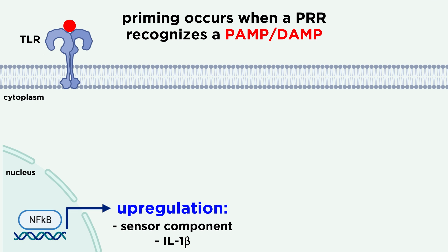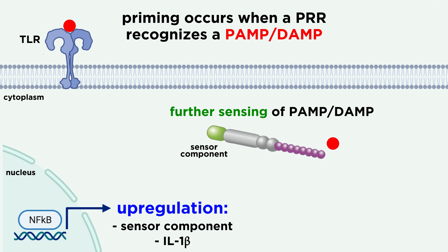Priming occurs when pattern recognition receptors sense PAMPs or DAMPs. The next step is sensing, which occurs when the sensor component senses additional PAMP or DAMP signals.